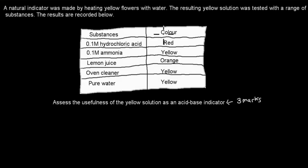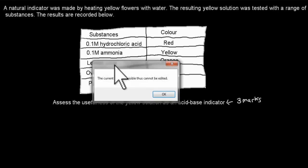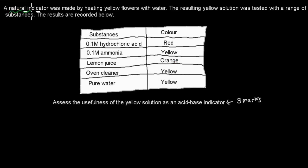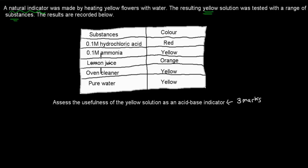Welcome back. For this kind of question, the first thing you should do is figure out the pH range of each substance. Hydrochloric acid is a very strong acid and would tend to have a pH of around 0 to 1.